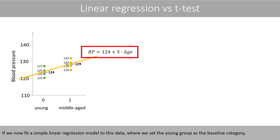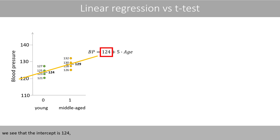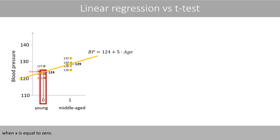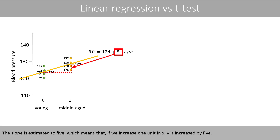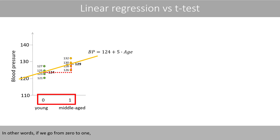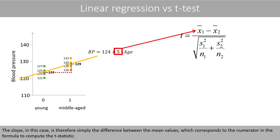If we now fit a simple linear regression model to this data, where we set the young group as the baseline category, we see that the intercept is 124, which corresponds to the value where the line intercepts the y-axis when x is equal to 0. The intercept of the model actually corresponds to the mean blood pressure of the young group, which is our baseline or reference group. The slope is estimated to 5, which means that if we increase one unit in x, y is increased by 5. In other words, if we go from 0 to 1, the systolic blood pressure increases by 5. The slope in this case is therefore simply the difference between the mean values, which corresponds to the numerator in the formula to compute the t-statistic.